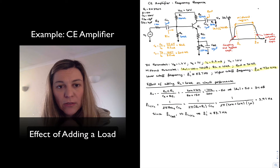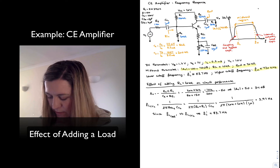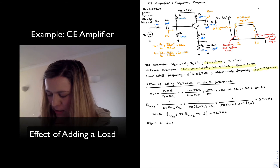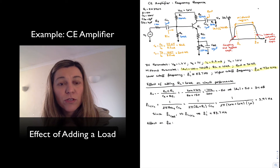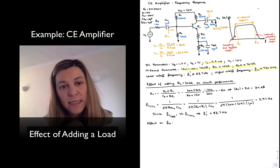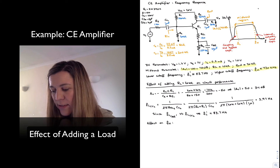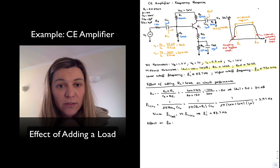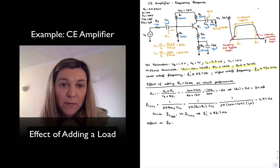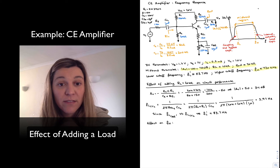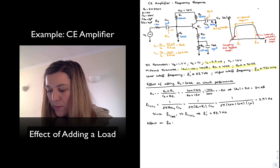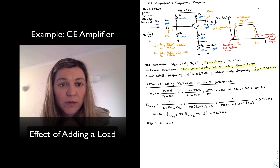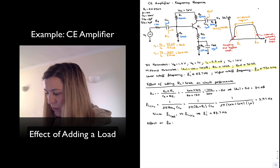Now let's look at the high cutoff frequency FH. The load resistor affects both the input and output capacitances. For the input capacitance, the Miller effect means the feedback capacitance CBC is multiplied by the circuit gain. Since loading has reduced the effective gain from 100 to 50, our Miller capacitance will be about half of what we calculated before.